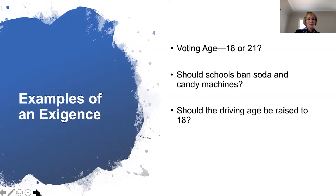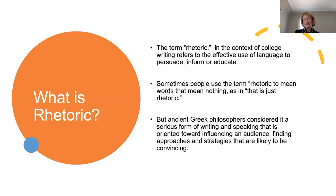Now, what is rhetoric? Sometimes people think the word rhetoric means something that doesn't mean anything — they say, 'oh, that's just rhetoric.' But really, rhetoric refers to writing that is used to persuade, inform, or educate. Ancient Greek philosophers such as Aristotle considered rhetoric a serious form of writing and speaking oriented toward influencing an audience. Aristotle said that rhetoric is finding the available means of persuasion — what can you say or write that will have your audience say, 'wow, that's a pretty good idea worth considering'?